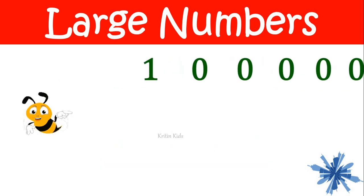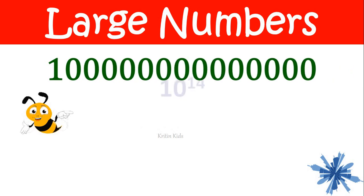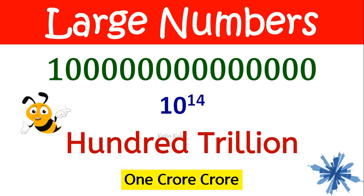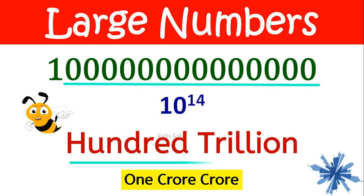Then if I add one more zero here, it becomes hundred trillion, that is one crore crore. That is one followed by fourteen zeros gives us hundred trillion.